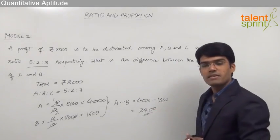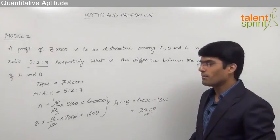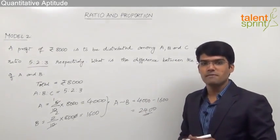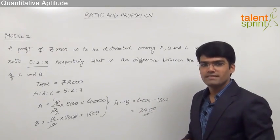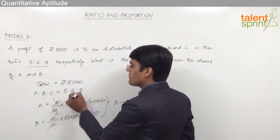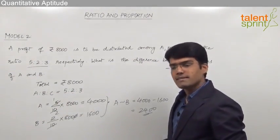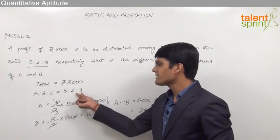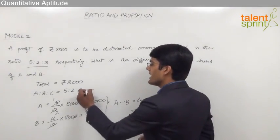This is the conventional way of solving the problem but this question can be simplified without writing these many steps in a few seconds. The simple idea here is we know that the total number of parts among A, B and C is 5 plus 2 plus 3 that is nothing but total 10 parts.